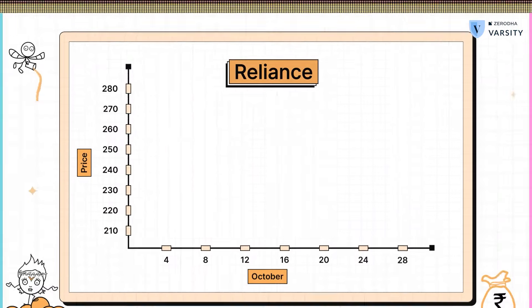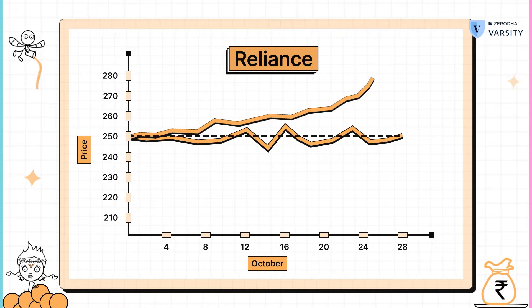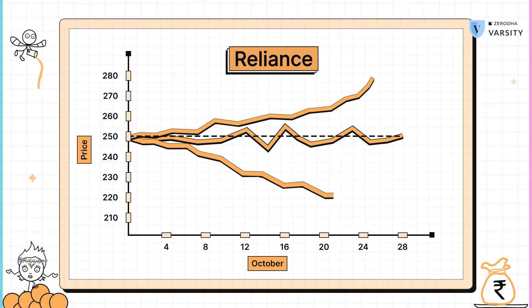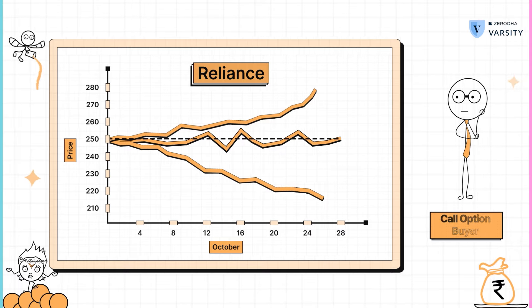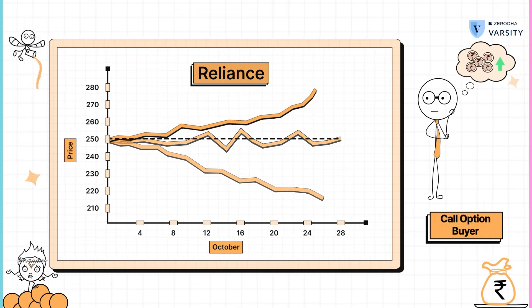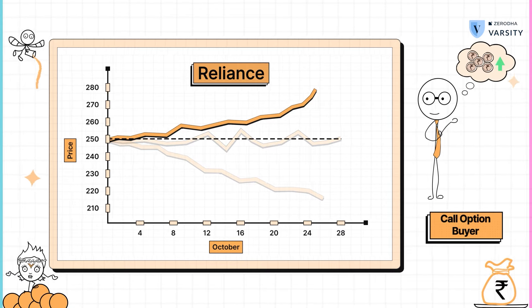What do you think is the favorable outcome for a call option buyer? After you buy an option, there are only three possible outcomes: either the stock price increases, stays flat, or decreases. And the only favorable outcome to the call option buyer is that the price of the underlying increases by expiry.